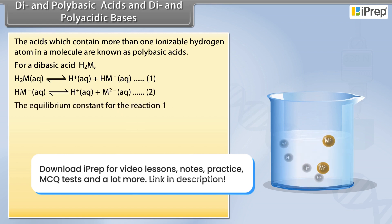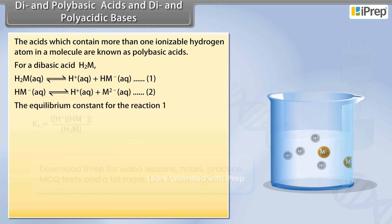The equilibrium constant for the reaction 1. Ka1 is equal to [H+][HM-] by [H2M].